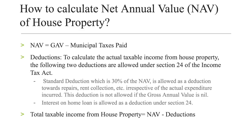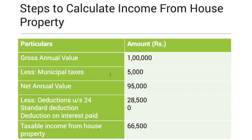Now we calculate the total taxable income from house property, which is net annual value minus deductions. In our case, the net annual value is 95,000 rupees minus 28,500 rupees as deduction, so the total taxable income from house property comes down from 1 lakh to 66,500 rupees.